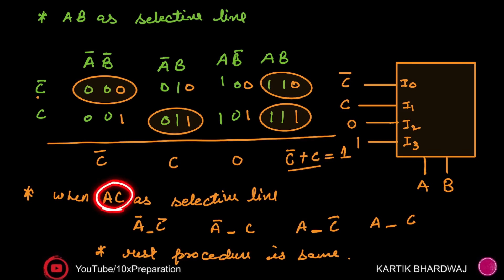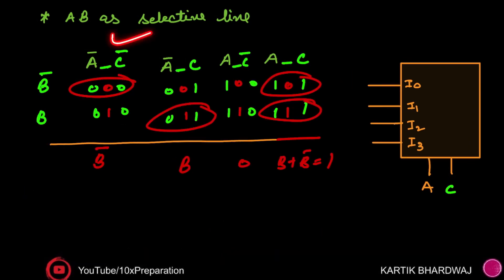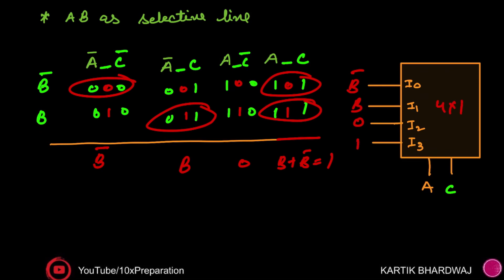Now consider a special scenario where you are asked to select A and C as the select lines instead of A and B. The process is the same: write all possible combinations of A and C, then fill in the remaining variable B with dashes representing B̄ and B. Identify the minterms 0, 3, 6, 7 as before. Assign B̄, B, 0, and 1 accordingly to the four MUX inputs, giving you a 4×1 MUX implementation.